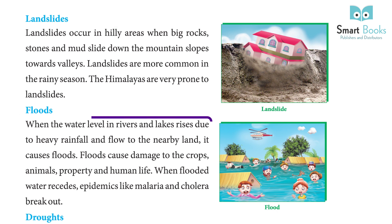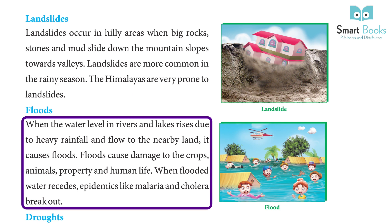Floods: When the water level in rivers and lakes rises due to heavy rainfall and flows to the nearby land, it causes floods. Floods cause damage to crops, animals, property and human life. When flooded water recedes, epidemics like malaria and cholera break out.